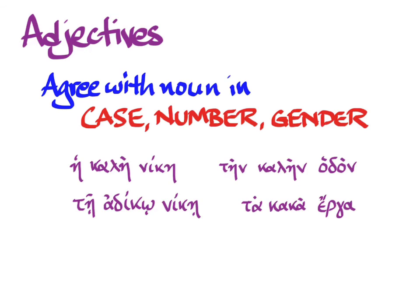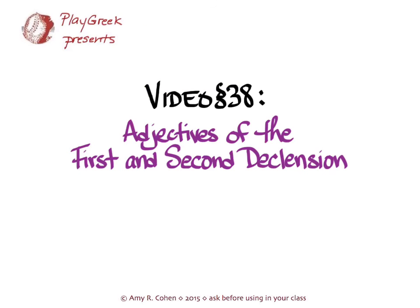And one more so you can see a little bit of neuter: ta kaka erga — 'the evil deeds.' Again, they match in case, number, and gender, and this time they also happen to match in their spelling. That's just a taste of what you're capable of now that you know the endings of adjectives of the first and second declension. Now go practice and read Greek.